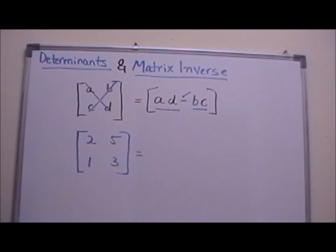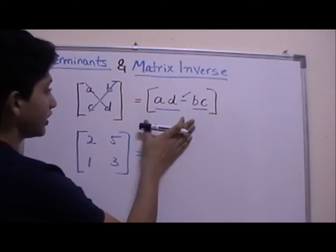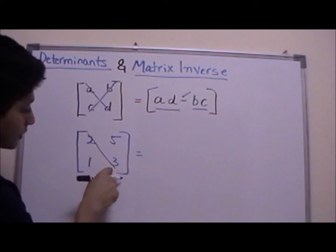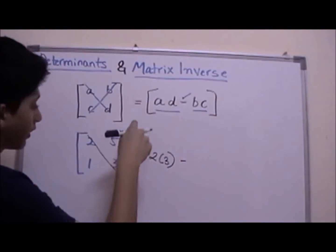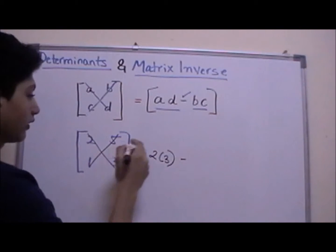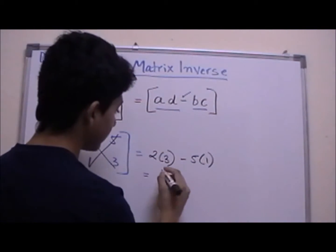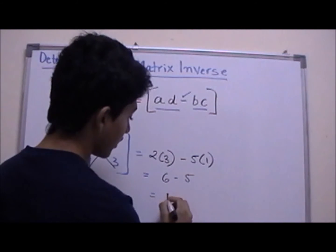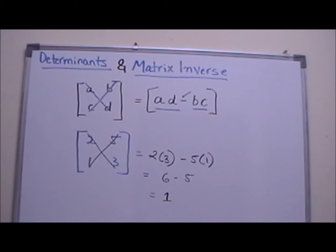Let's find the determinant of this matrix using cross multiplication. Two times three comes first — following the X pattern — minus, then five times one. Two times three is six, six minus five equals one. So one is the determinant of this matrix.